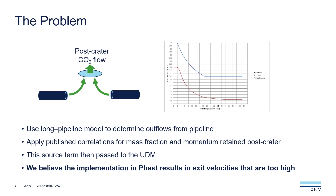We apply published correlations for the fraction of initial mass and momentum present in the flow leaving the crater, which allows us to calculate a source term which we then pass to the UDM. We believe the implementation of this in FAST results in exit velocities that are too high, causing the jet-like plumes which we see coming out of the crater. Essentially, we think our calculated source term represents a flow covering only a fraction of the crater area, and so it's not representative of the flow we tend to see emerging from the crater in these experiments.